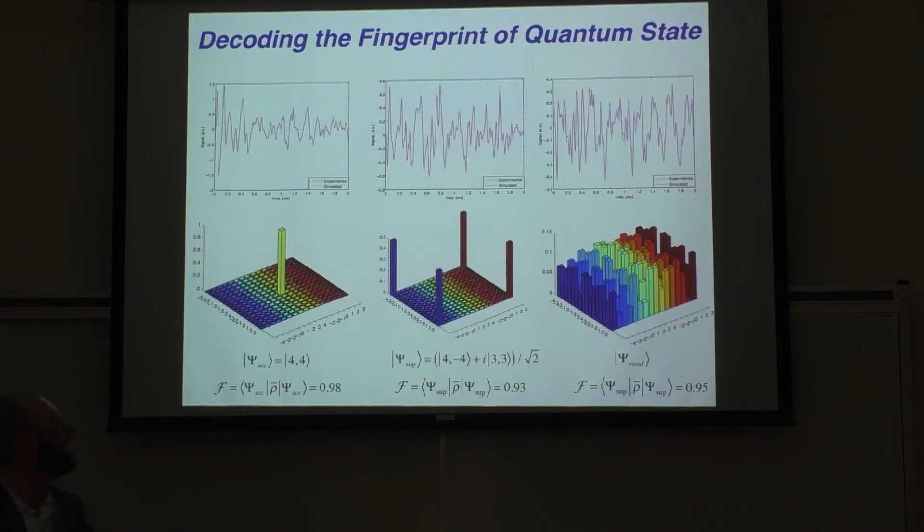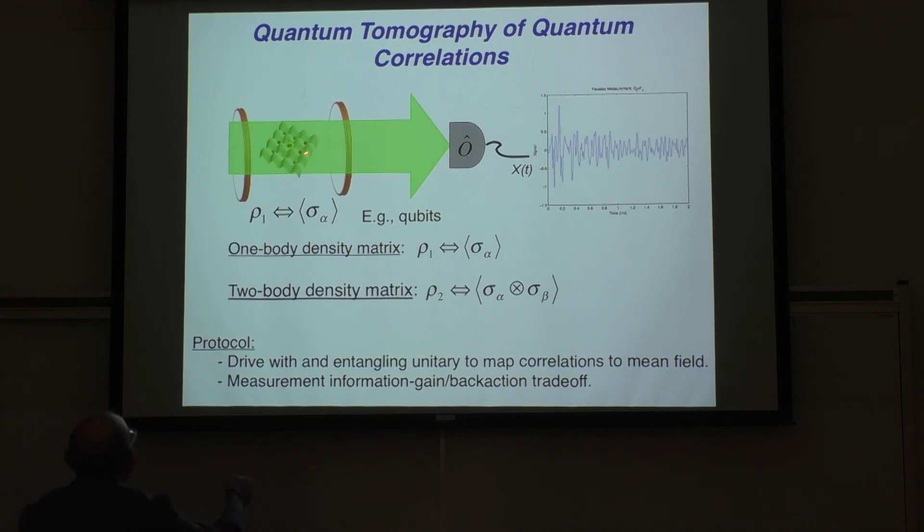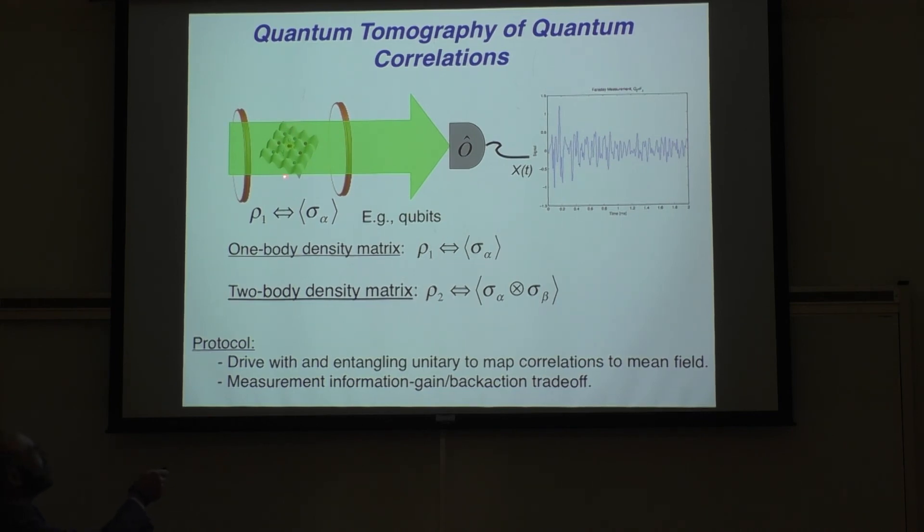And so we really can think about each one of these measurement records as a kind of fingerprint. It tells us every little bump and wiggle in this signal tells us something about what the initial quantum state is. And we can invert that. We'd like to extend this to doing, remember I told you about quantum simulators. What if we prepared some phase of matter like that appeared in a high-temperature superconductor. Can we do this kind of continuous vector tomography to extract correlations? So that's not just what the individual state is, but the order parameter associated with it. And that's something interesting.